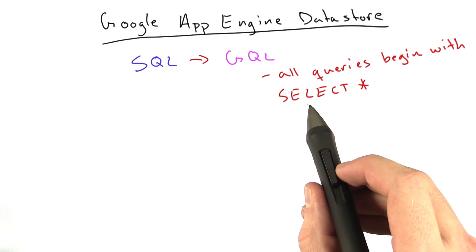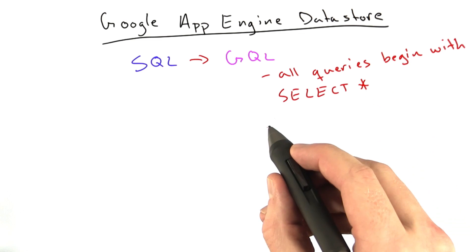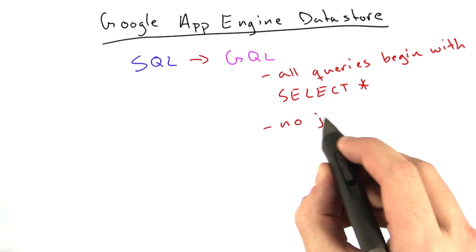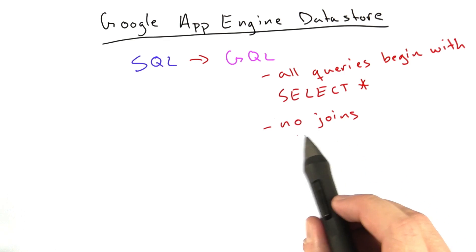And the main difference is all queries begin with select star. So there's no way to select individual columns. So this actually simplifies a lot of the queries we can do. For example, we can't do joins, which is why I didn't want to spend a whole lot of time on joins earlier.